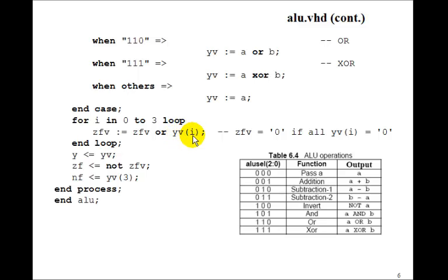If any bit is set, then this will be 1. But if they're all 0, then this will be 0. So this will be 0 if all the bits are 0. But we want the zero flag to be 1 when all the bits are 0. So we'll just set the zero flag to not zero flag variable. Y just gets the Y variable. The negative flag just gets the Y variable sub 3, the most significant bit or the sign bit. So if the sign bit is set, the negative flag gets set. That implements the ALU.